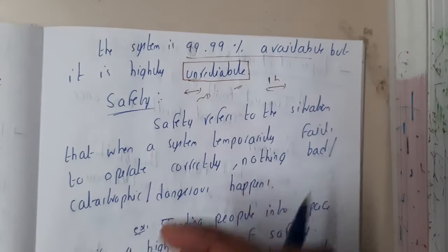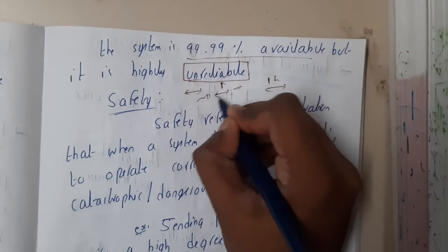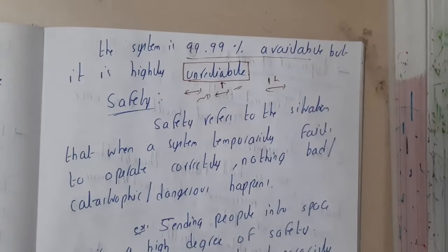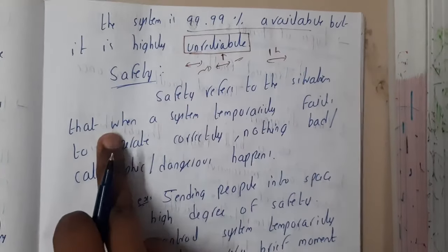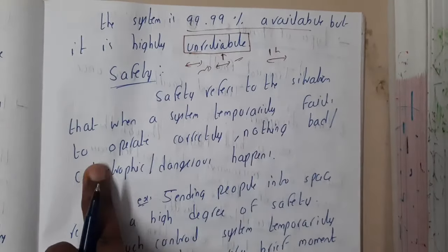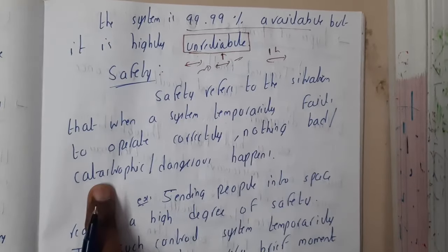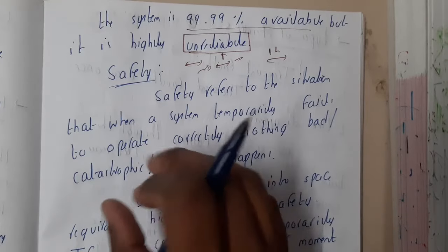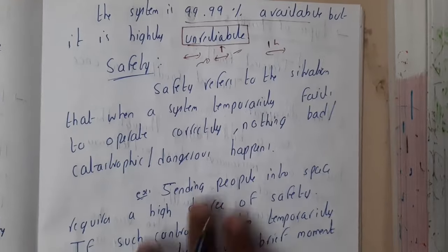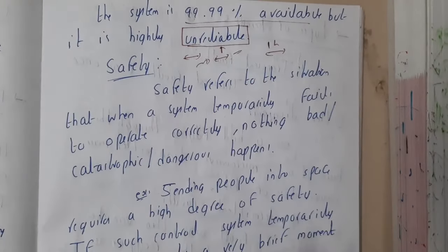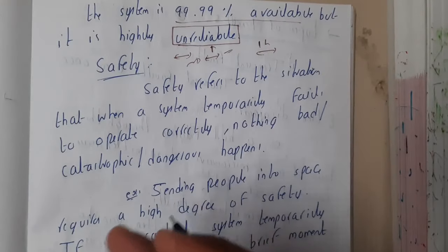So the key difference: in reliability, it must be continuous — that's the thing to remember. Similarly, safety refers to the situation that when a system temporarily fails to operate correctly, nothing bad or dangerous will happen. Safety means any kind of hazardous issue is prevented.